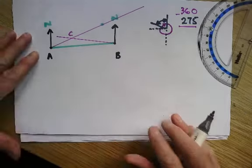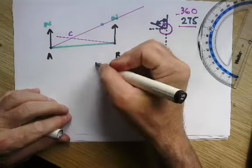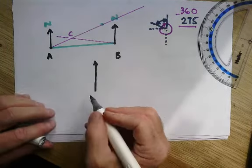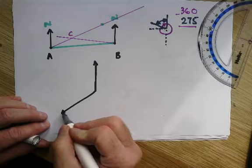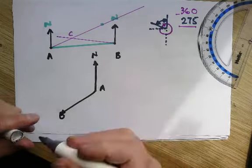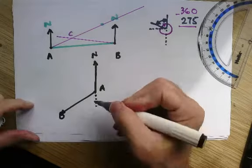Then it says work out the bearing of B from C. There's my north line, that's pointing towards B, there's my A.